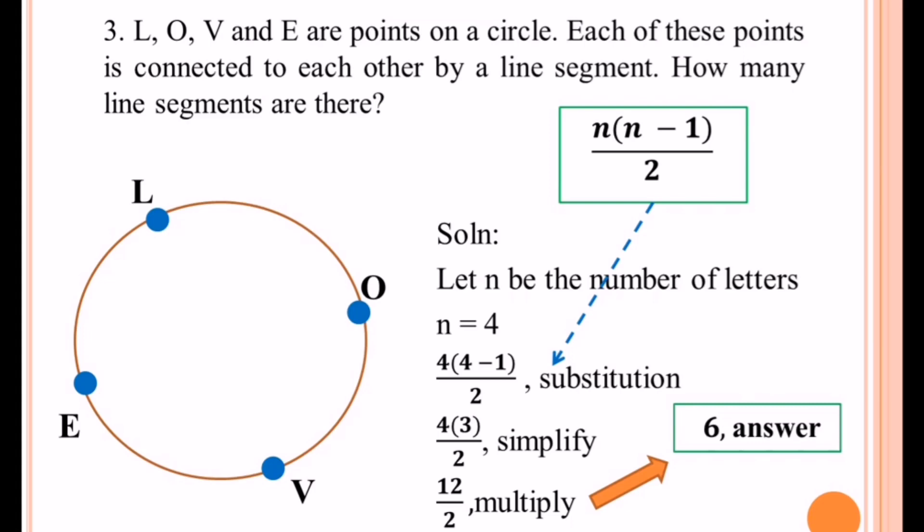If we try to connect L to O, that is one. O to V, that is two. L to E is three. We still have O to V, four. V to E, five. And we have E to O, six.